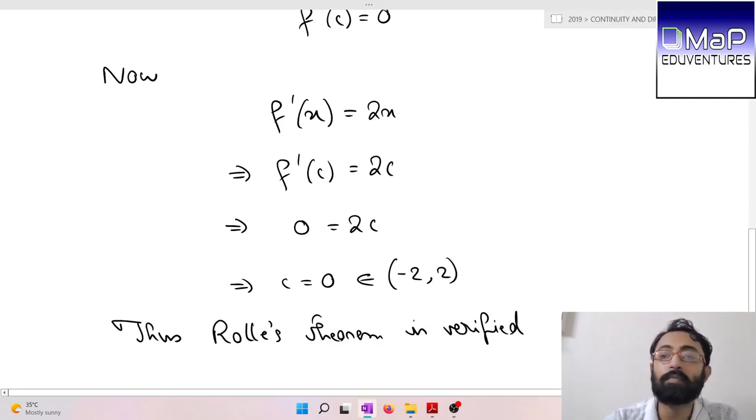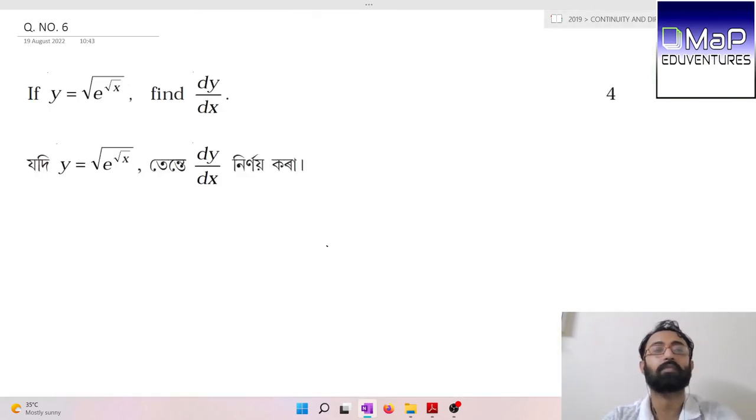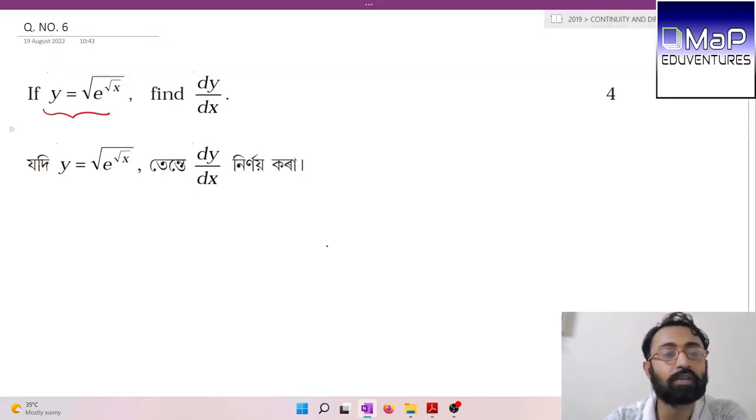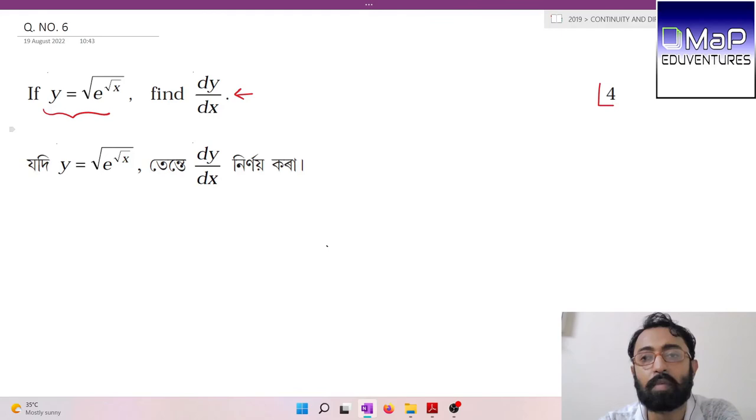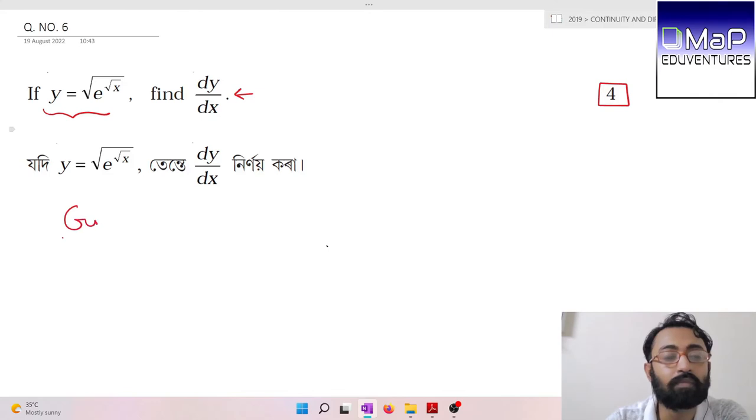Next question, question number 6: y equals square root of e to the power root x, and we have to find dy/dx. Very simple question, four marks. This is from NCERT exercise, most probably 5.4.